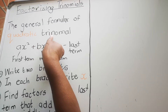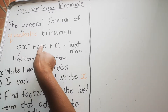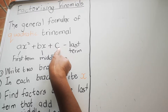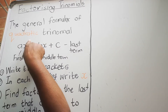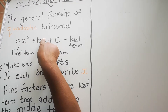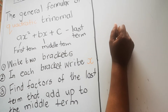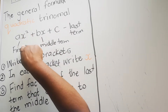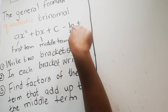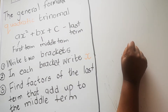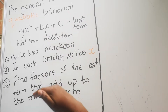A quadratic trinomial has three terms: the first term, the second term, and the third term. Quadratic means you'll have a number with an x squared, then another number with an x, and just a number. The term with x squared is called the first term, the term with x is called the middle term, and the constant is called the last term.